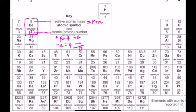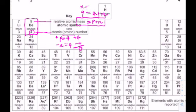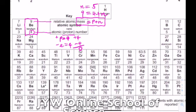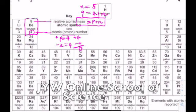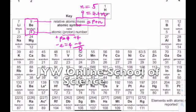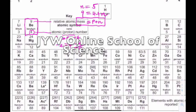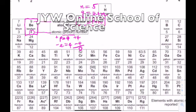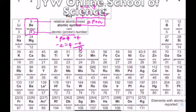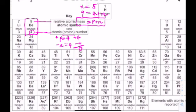The mass number is the number of protons plus neutrons. For beryllium the mass number is 9 and the proton number is 4, so the neutron number is 5. In other words: top number minus bottom number gives you the neutron number.